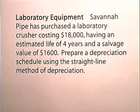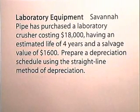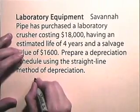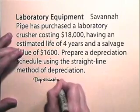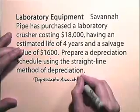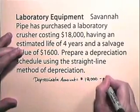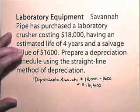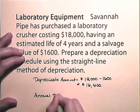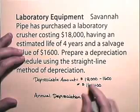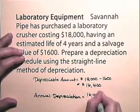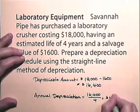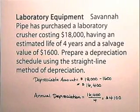Now let's use the straight line method to prepare a depreciation schedule. Savannah Pipe has purchased a laboratory crusher costing $18,000, having an estimated life of 4 years and a salvage value of $1,600. The depreciable amount will be $18,000 subtract $1,600, which equals $16,400. The annual depreciation will be $16,400 divided by 4, which is $4,100, or 25% of $16,400.